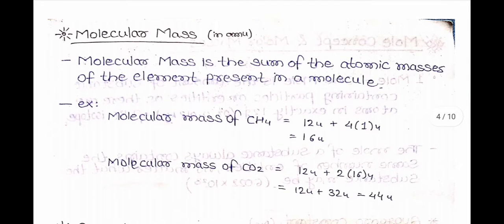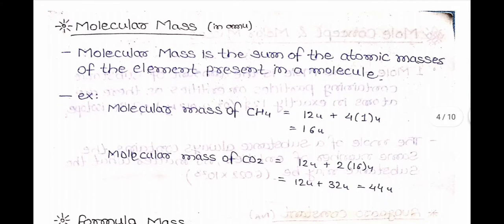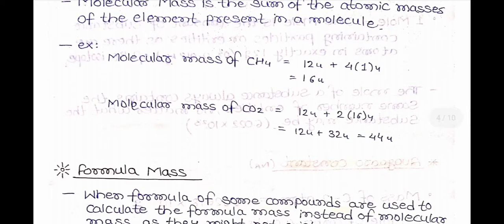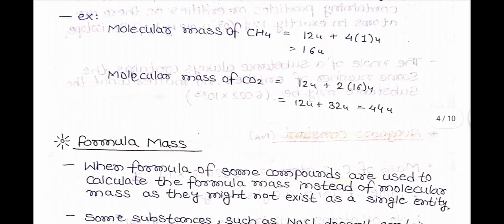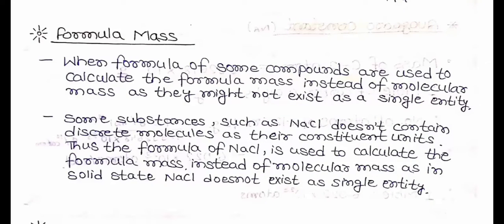Now, Molecular Mass: Molecular mass is the sum of atomic masses of elements present in a molecule. Example: molecular mass of CH₄ = 12U + 4×1U = 16U. Molecular mass of CO₂ = 12U + 2×16U = 12U + 32U = 44U.